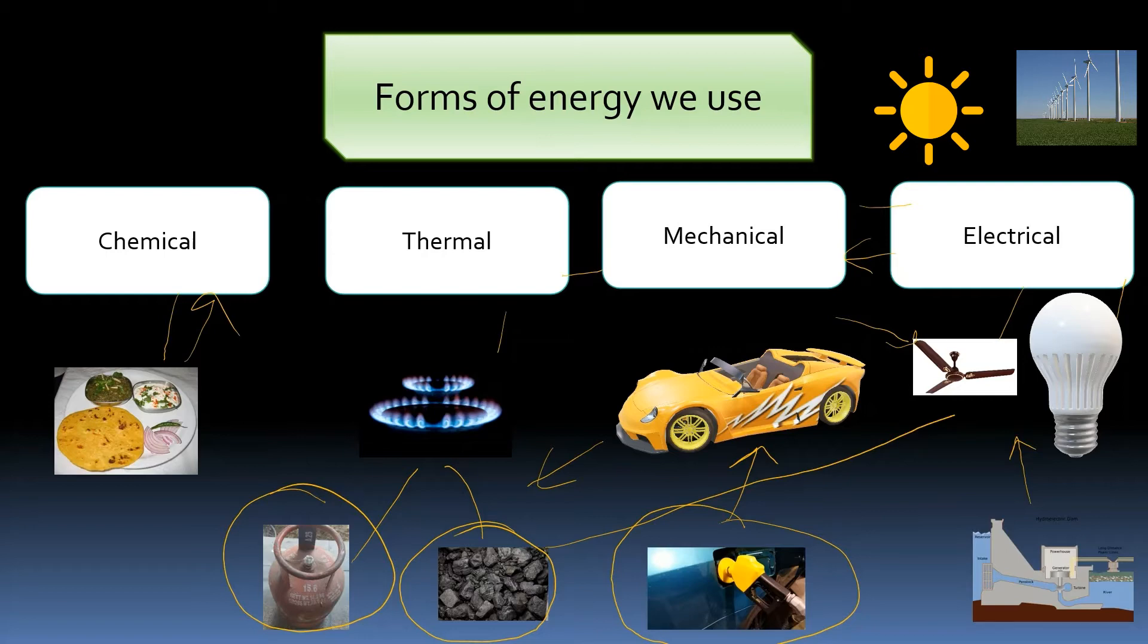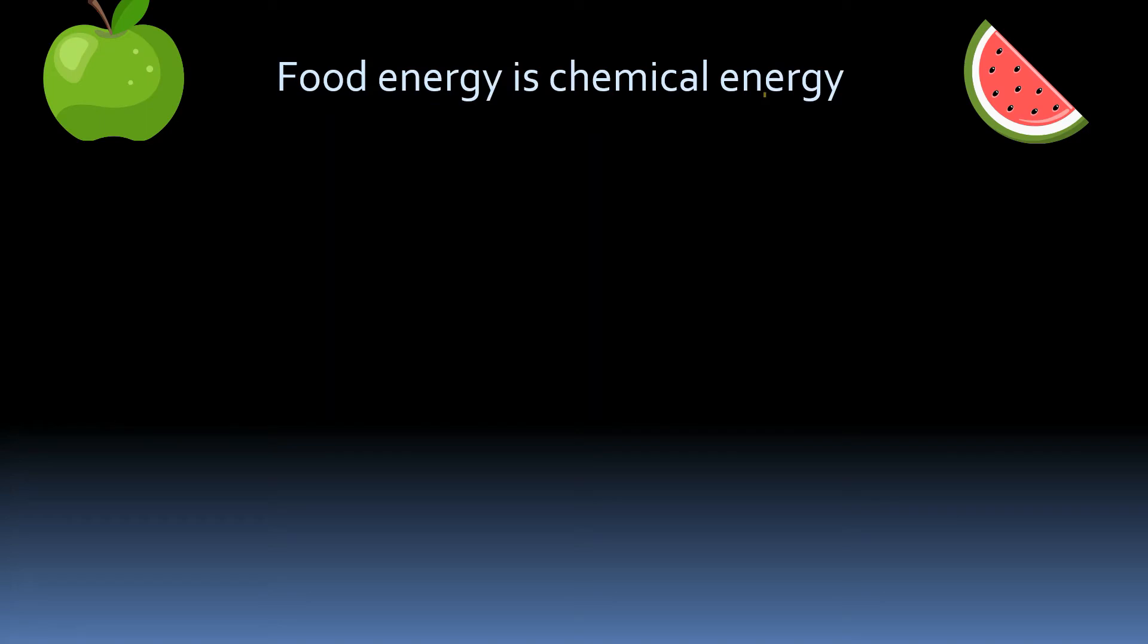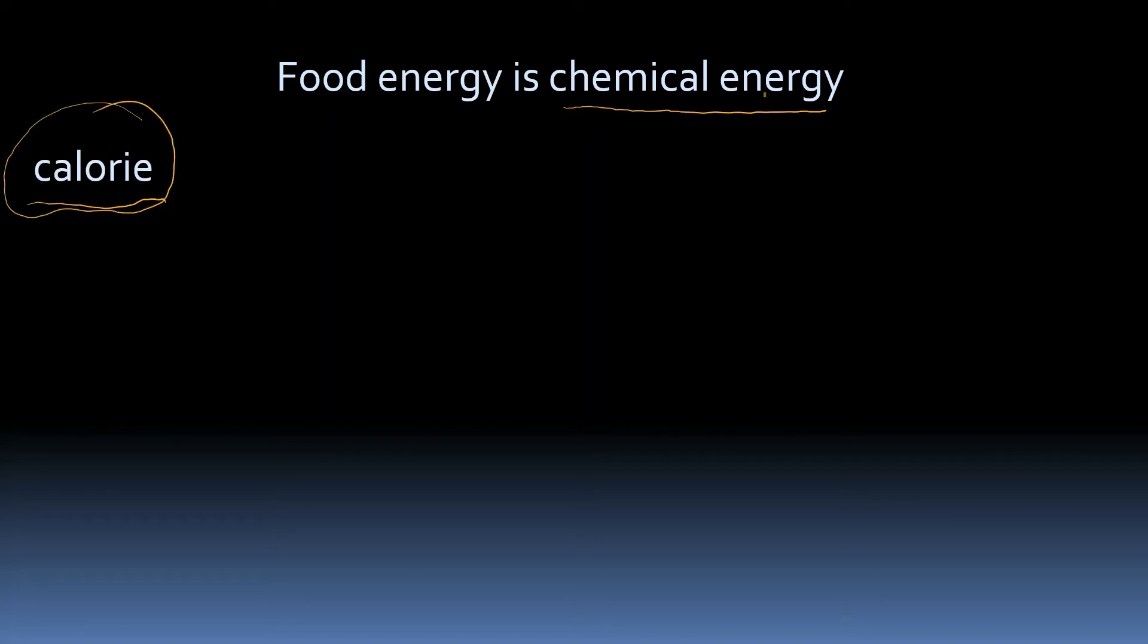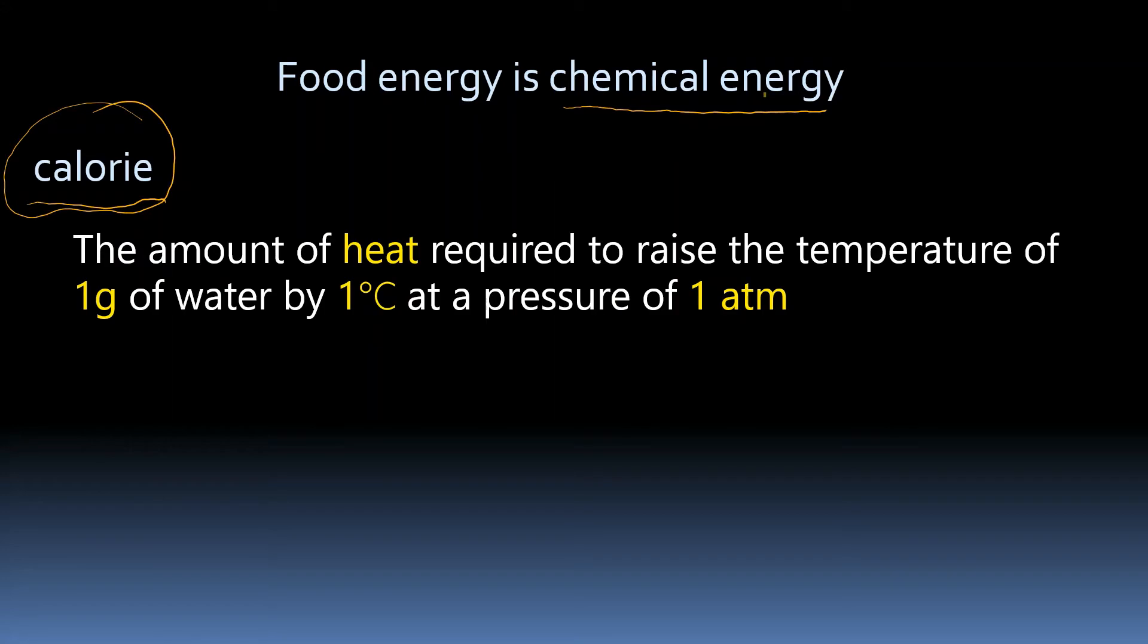Let's discuss different units of each type of this energy. Let's see first example of chemical energy, that is food energy. The units of food are measured in terms of calorie. Calorie is the amount of heat required to raise the temperature of 1 gram of water by 1 degree Celsius at a pressure of 1 atmosphere.